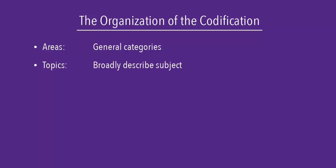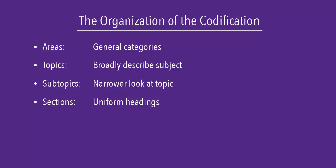Topics broadly describe the subject you are researching. Subtopics take a narrower look at the larger topic you selected. Sections are fairly uniform headings within subtopics and will include items such as scope, glossary, and initial measurement.